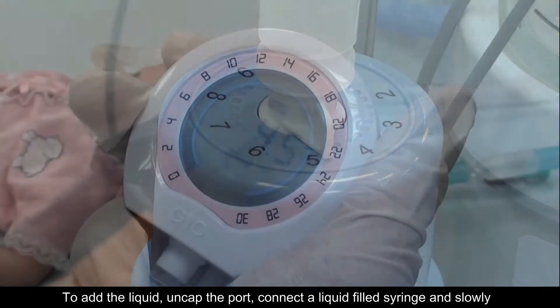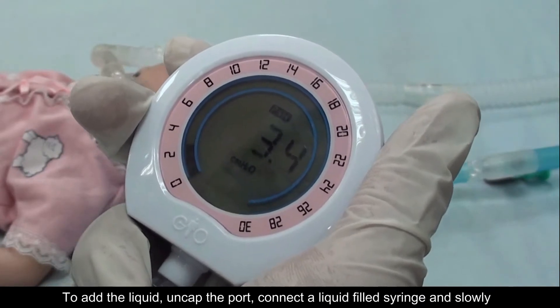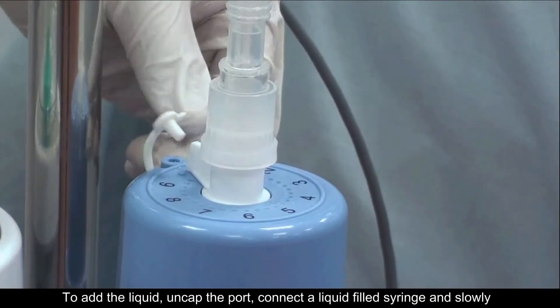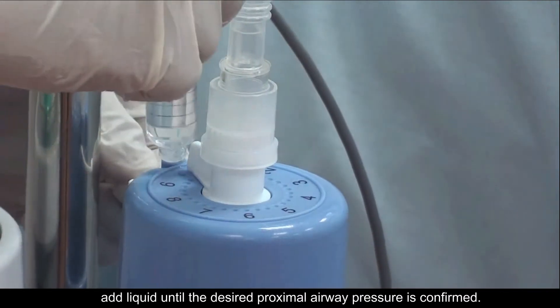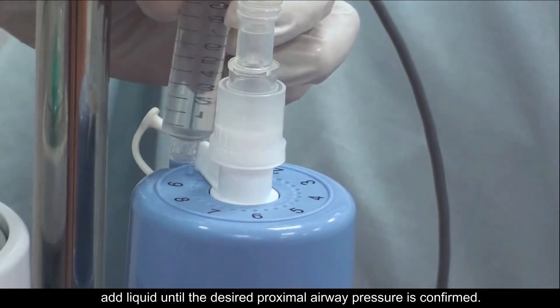To add the liquid, uncap the port, connect a liquid-filled syringe, and slowly add liquid until the desired proximal airway pressure is confirmed.